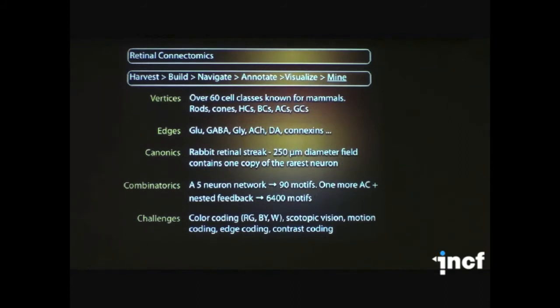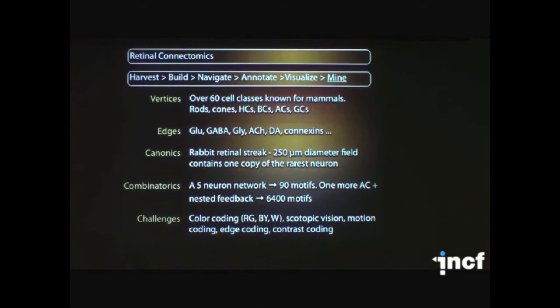So in terms of retina, we have a number of challenges that we're trying to dig out. First is that there are over 60 cell classes in the mammalian retina. Non-mammalians have even more complex retinas. 150 classes in zebrafish retina. The edges are our neurochemical connections and much more complex than that. The canonics are that we figure that a 250 micron diameter field captures everything we need for a first pass view of a retinal connectome.